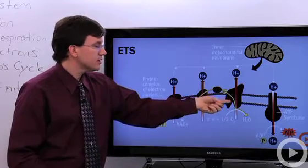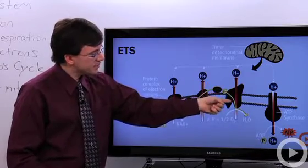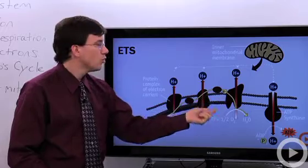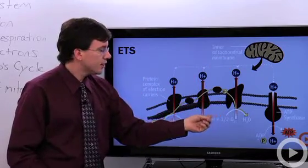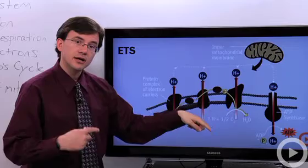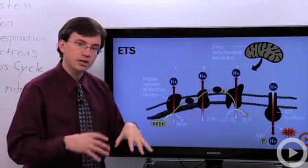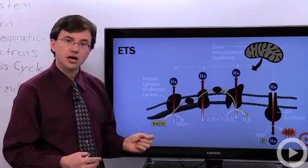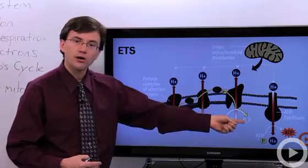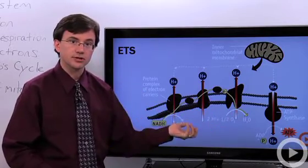This last electron, the electron then gets passed here to this last complex, where again hydrogen ions are moved across the membrane. And the used-up energy electrons, so now they're very low energy, they're dumped onto oxygen molecules to form water with some more of those hydrogen ions that are floating around inside of the matrix.